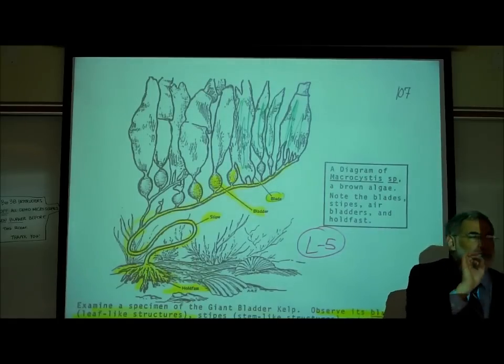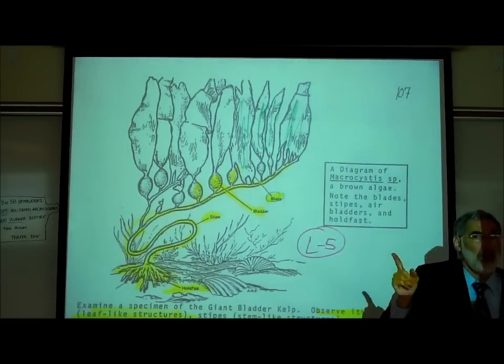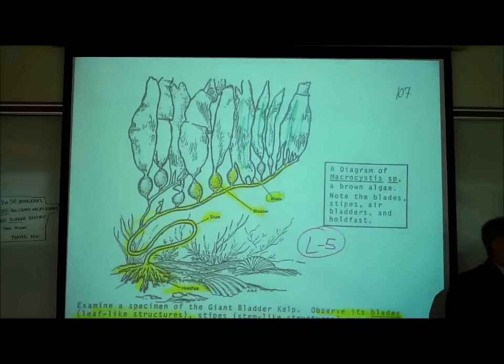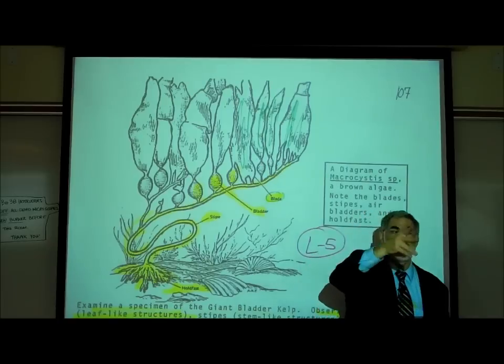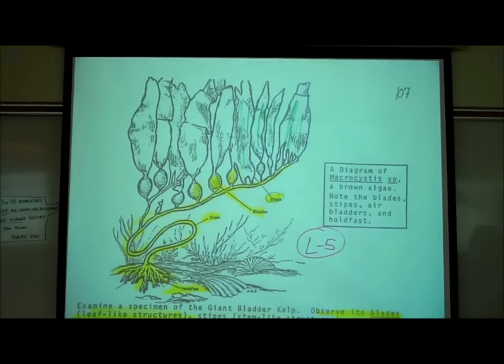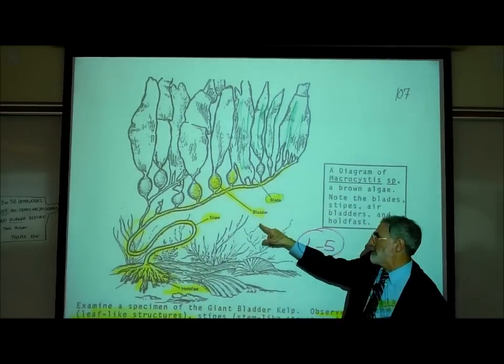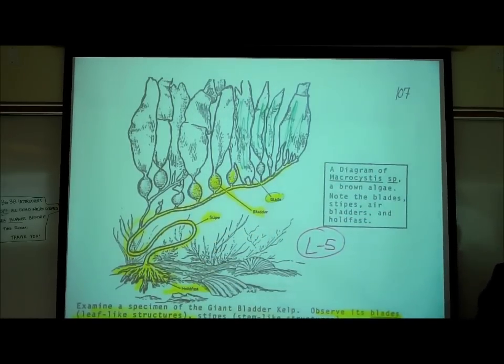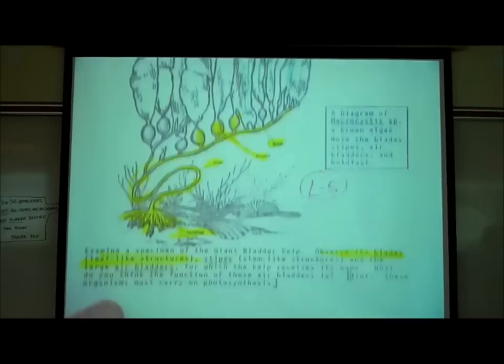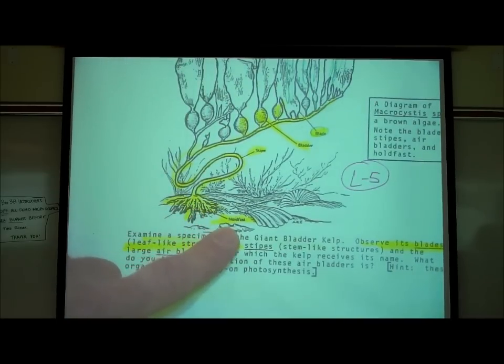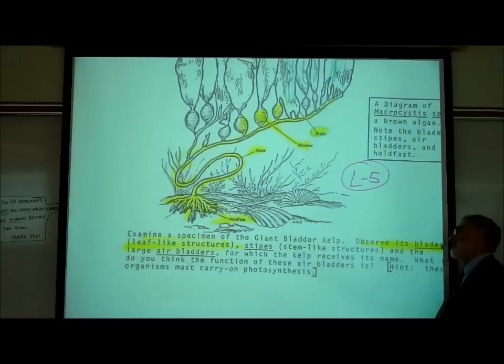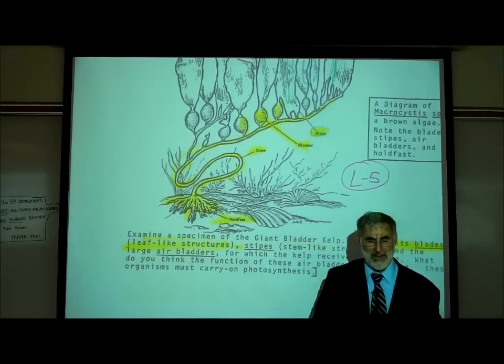We only use the word leaf when we're talking about plants that have vessels in them, and there are no vessels, there's no tubes, there's no veins in these so-called leaves, they are blades. When we look at a rose, the leaf of a rose has little veins or vessels, we call it a leaf. But here we don't have those vessels, this is not a vascular plant. Similarly, what you might call a stem is called a stipe for the same reason. Real stems have vessels in them, and this does not have any vessels. This is not a vascular plant, it's an algae.